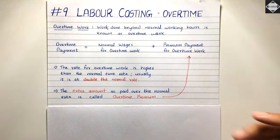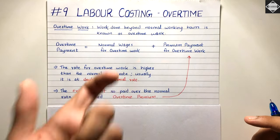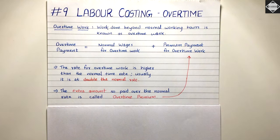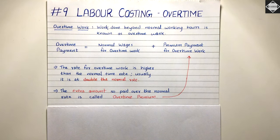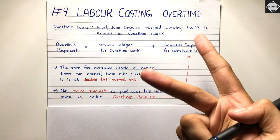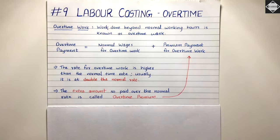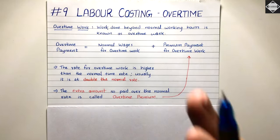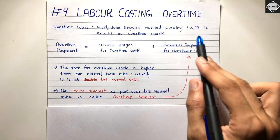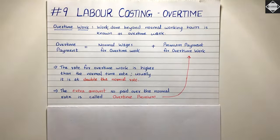Let's understand what overtime is. The concept is really simple — it's a general term you all know. Let's take an example: say your dad works in an office with normal working hours from nine to six. On a certain day, rather than leaving at 6 p.m., he had to work two extra hours and left at 8 p.m. That two hours of extra work is called overtime. Work done beyond normal working hours is known as overtime work.